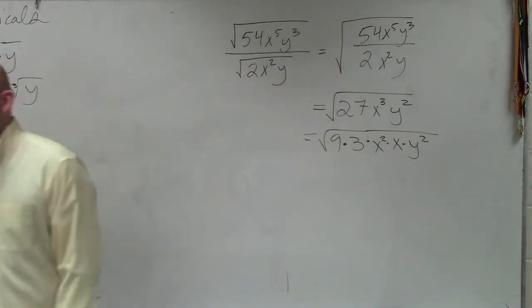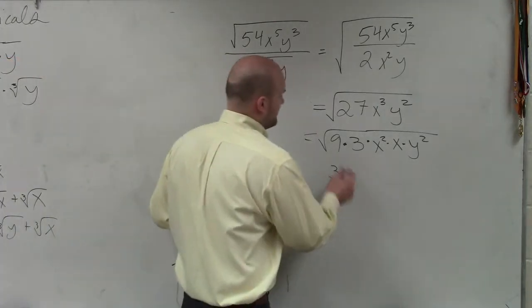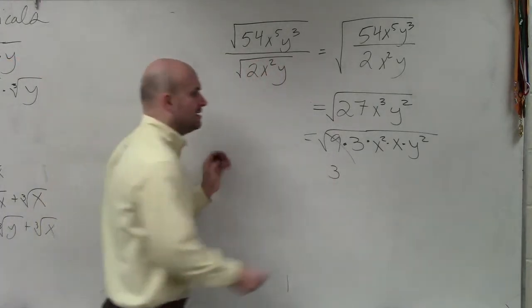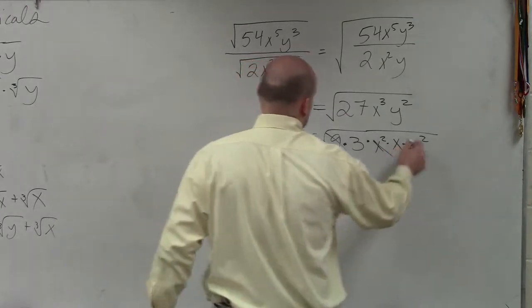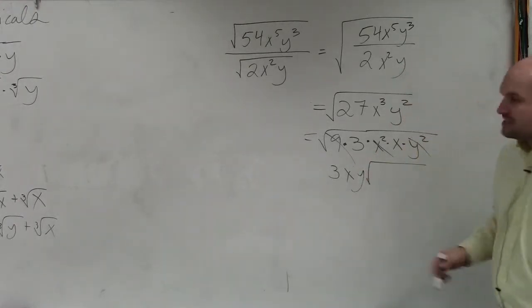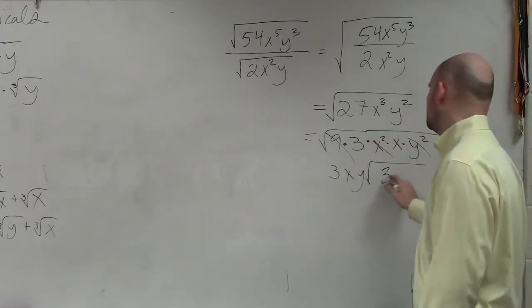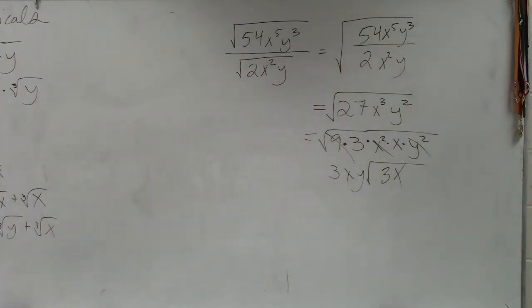So, now we just go through taking the square root of each of those terms. So the square root of 9 is? 3. The square root of x squared is? x. The square root of y squared is? y. So, what's left over? Oops, that's a y. What's left over is a 3x. So your final answer is 3xy times the square root of 3x.